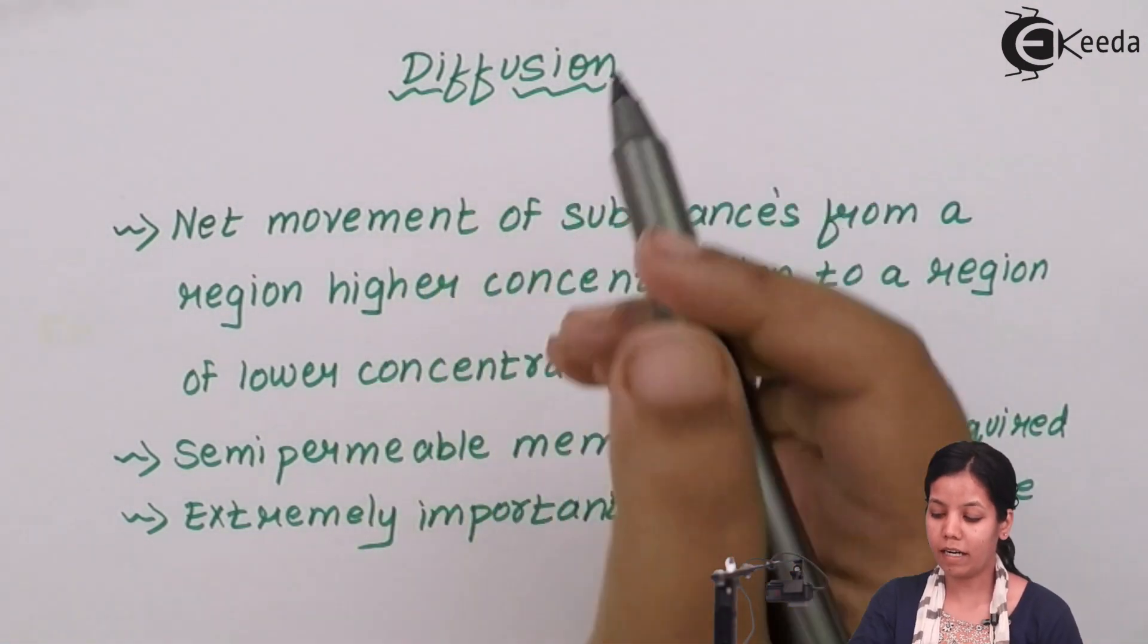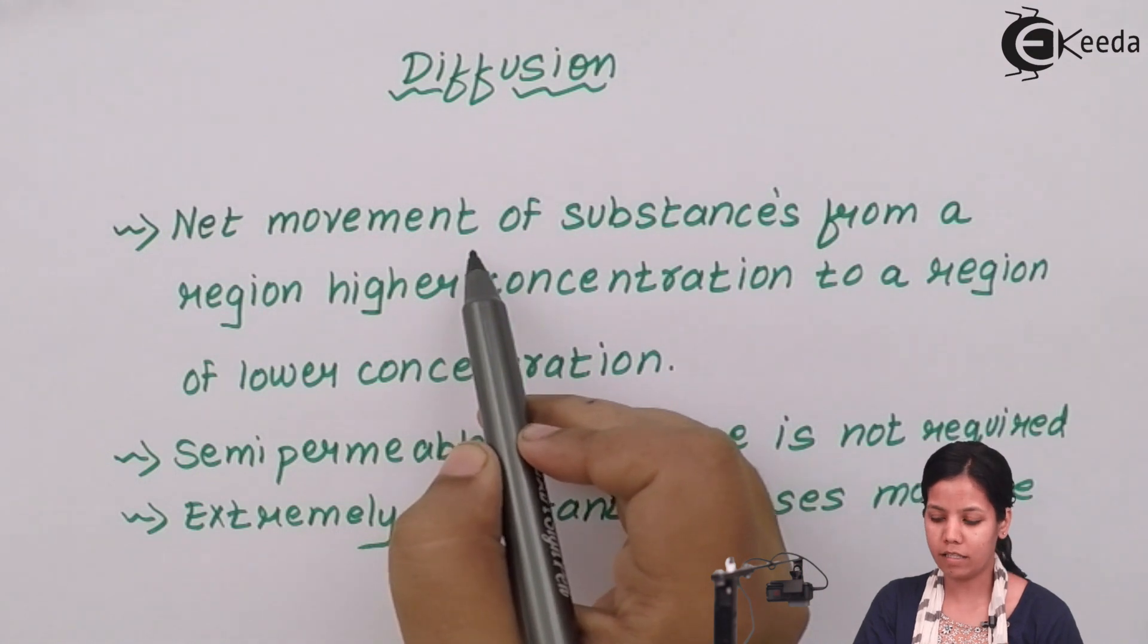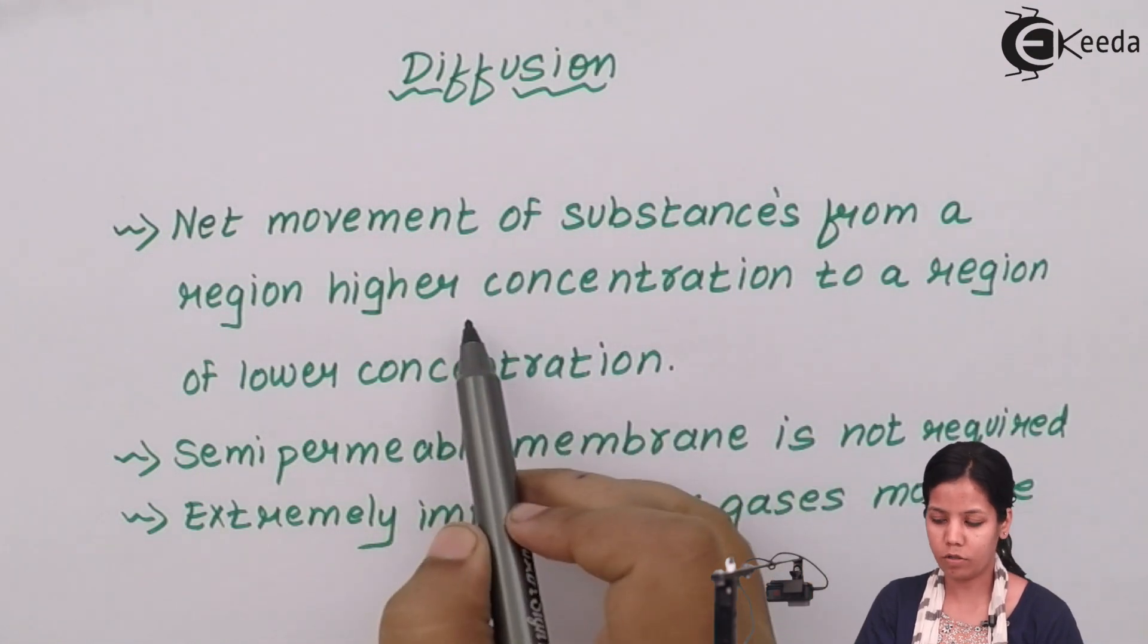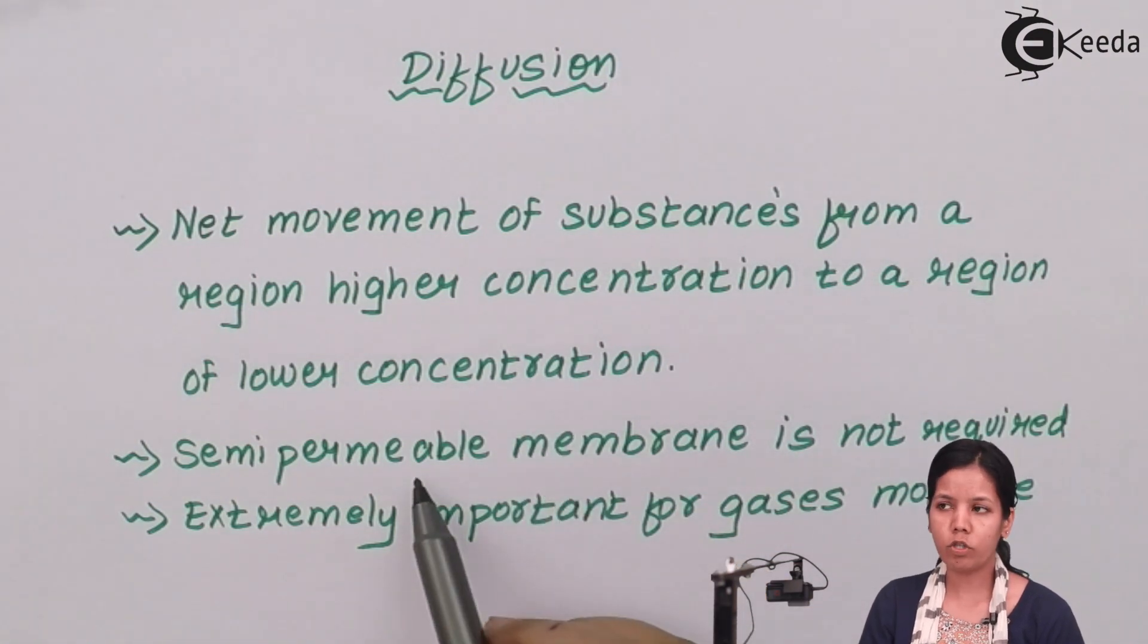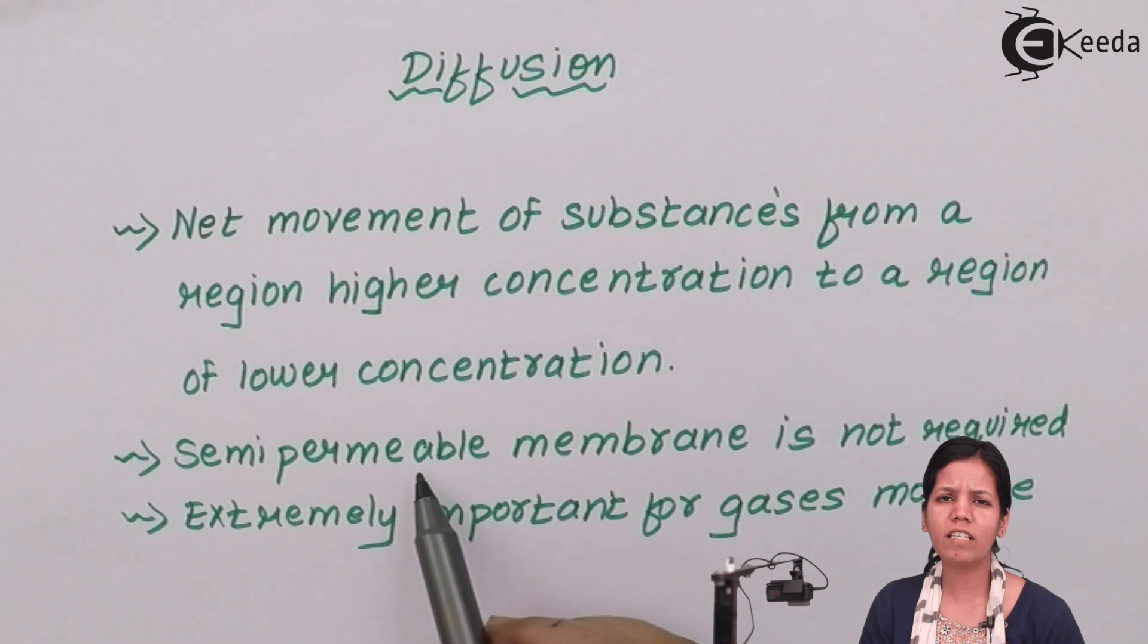Diffusion is nothing but net movement of a substance from a region of higher concentration to a region of lower concentration. For diffusion to occur, semi-permeable membrane is not at all required. For example, when you spray a perfume inside a room, there is no need of semi-permeable membrane for that gas or aroma to spread inside that room.